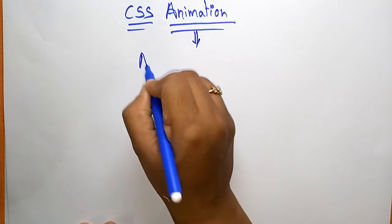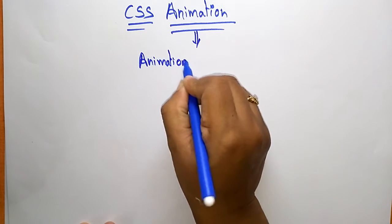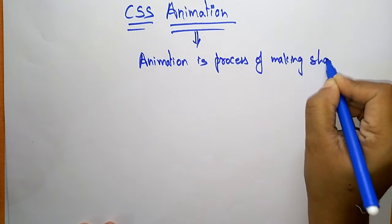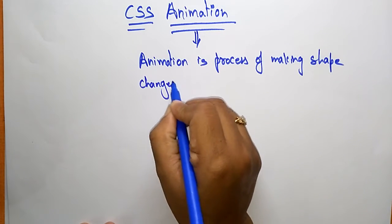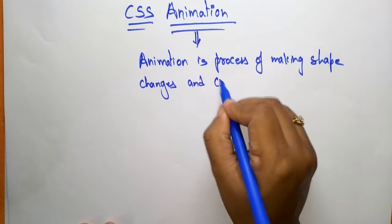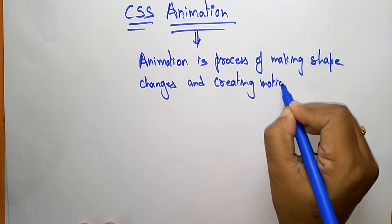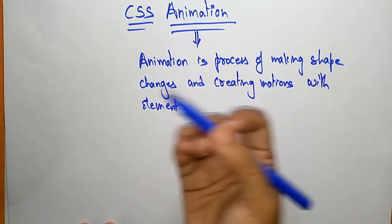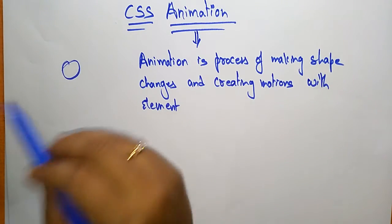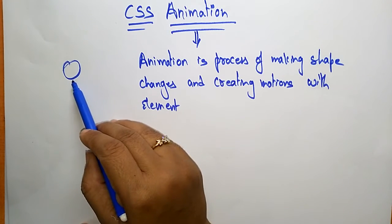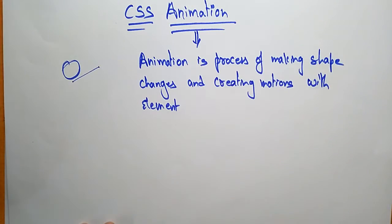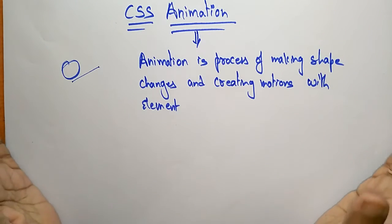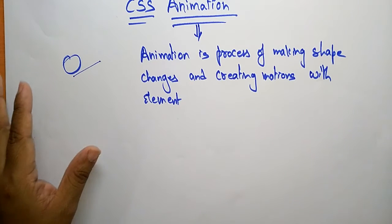So what exactly is animation? Animation is a process of making shape changes and creating motions with an element — that you call animation. Animation means whatever object or element you are taking, that element changes its position from one place to another in whatever direction. You can change the color, you can change the position, you can convert it into 2D or 3D. That complete process you call animation. So to use CSS animation, you must first specify one keyword.